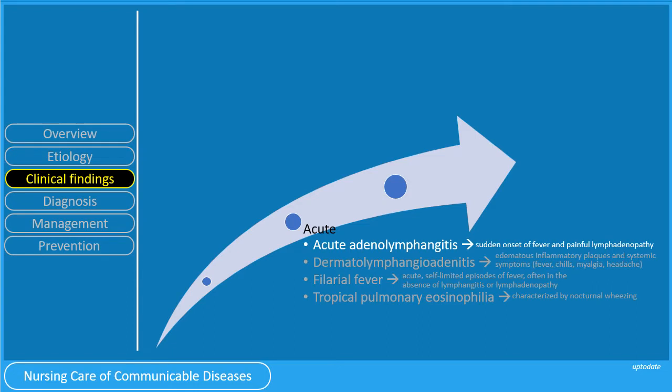Acute adenolymphangitis manifests with sudden onset of fever and painful lymphadenopathy. Dermatolymphangioadenitis presents with edematous inflammatory plaques and systemic symptoms such as fever, chills, myalgia, and headache. Filarial fever manifests as acute, self-limited episodes of fever, often in the absence of lymphangitis or lymphadenopathy.